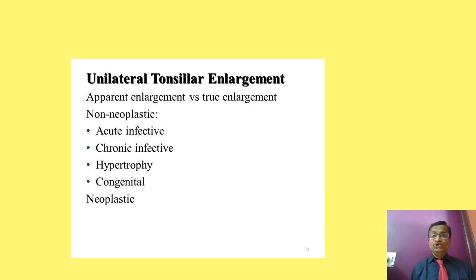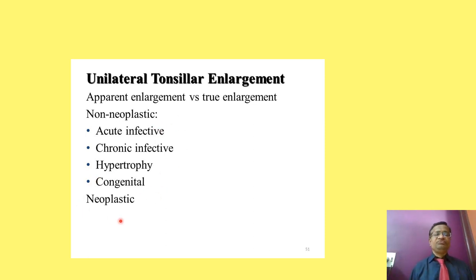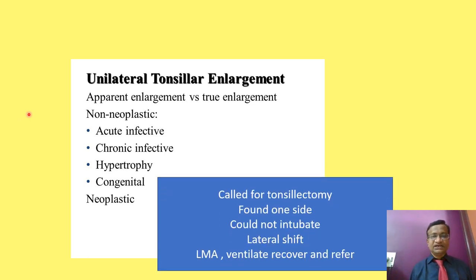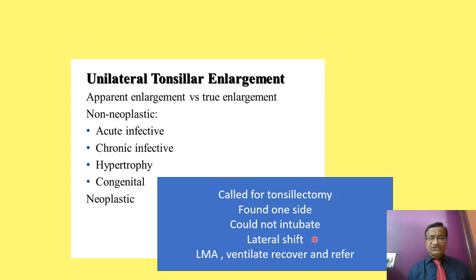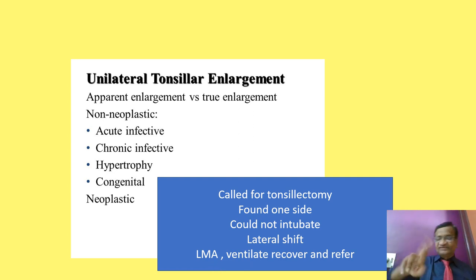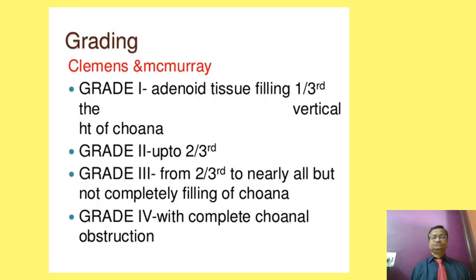There may be unilateral apparent enlargement versus true enlargement — acute infective, hypertrophic, congenital, or neoplastic. We have encountered neoplastic unilateral tonsillar enlargement: called for tonsillectomy and found one side where intubation was impossible due to a complete airway shift. I introduced a tube on the other side and transferred the patient to a better center for fibreoptic intubation.